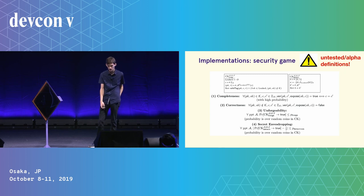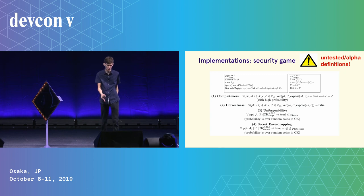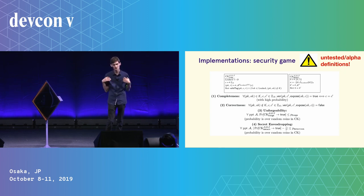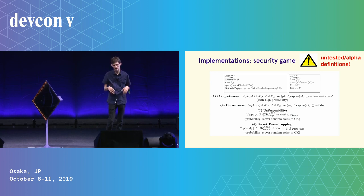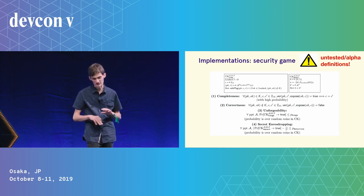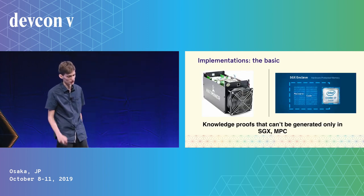We consider two computation environments: an untrusted computation environment and an eavesdrop environment. We want to ensure that a user has to send their private data through an environment they can also eavesdrop on. The proof scheme requires two key properties: unforgeability — you can't prove knowledge of secret data you don't have — and secret eavesdropping, meaning you can eavesdrop on your own data and nobody in the network can tell whether you did. If they could tell, they could simply require you not to eavesdrop when they bribe you.